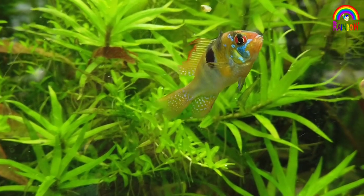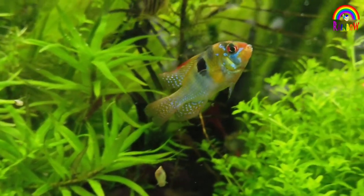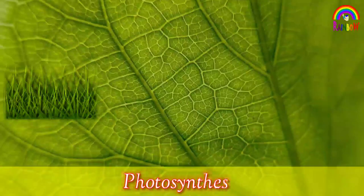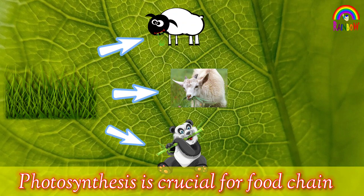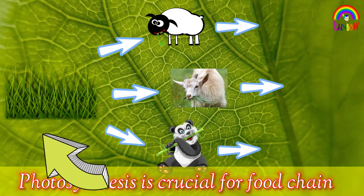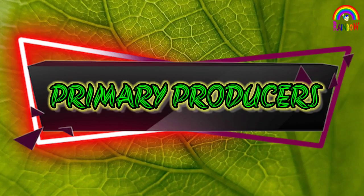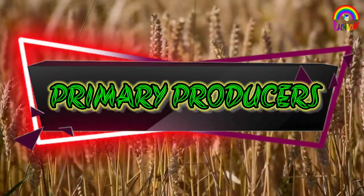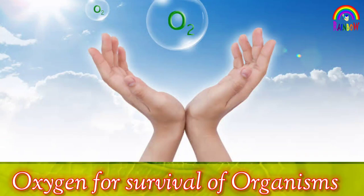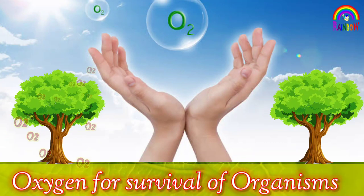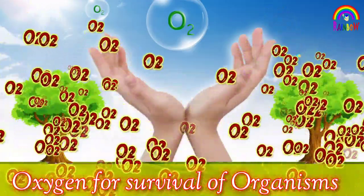Photosynthesis is essential for the existence of all life on earth. It serves a crucial role in the food chain — plants prepare their own food by this process and become primary producers. Photosynthesis is also responsible for the production of oxygen, which is needed for the survival of all organisms.